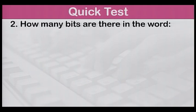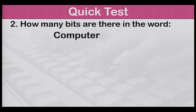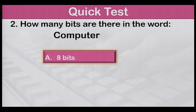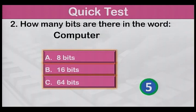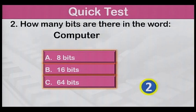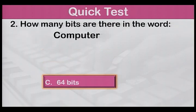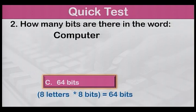Number two: How many bits are there in the word COMPUTER? A: 8 bits, B: 16 bits, or C: 64 bits? The answer is C, 64 bits. There are eight letters in the word COMPUTER. Therefore, eight times eight is equal to 64.